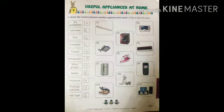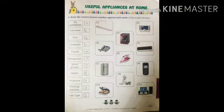Let's check the answers. Air conditioner is already done. Television — number two. Iron — six. Computer — eleven. Toaster — number ten. Refrigerator — number seven. Mixer grinder — number nine. Mobile — eight. Telephone — number four. Washing machine — number three. And last one is the tube light. Children, write the correct number. If you have any doubt, please ask me.